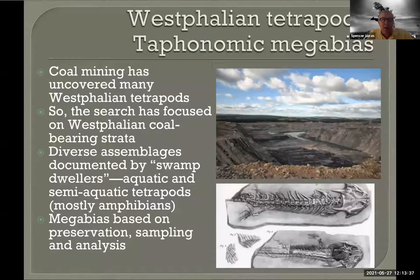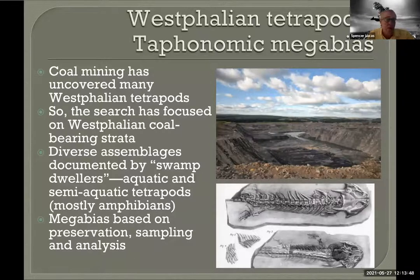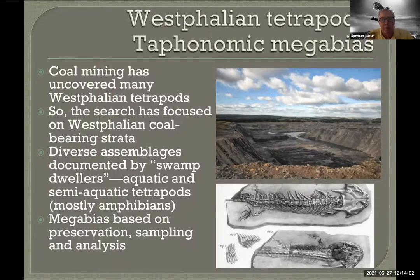Everything we've been talking about on land should be filtered through this idea that there is a big megabias. I'm sure this affects our understanding of the flora, the arthropods, the tetrapods, etc. We're not looking at an isotaphonomic system going from Muscovian to Casimovian — on land it's rarely isotaphonomic. There's usually a big facies change and the taphonomy changes as well, and that affects our understanding of the fossil record on land.